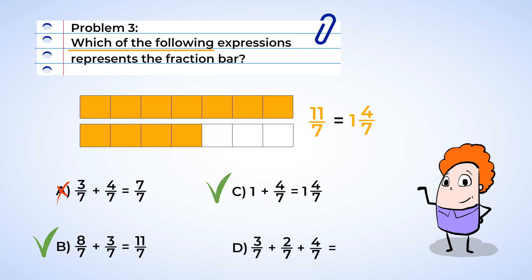And last one, D: three-sevenths plus two-sevenths plus four-sevenths. Three plus two is five, and add four would get us to nine. So this expression is equal to nine-sevenths, which is not quite large enough to match. So D is not an answer. Only the expressions for B and C correctly represent the fraction bar.